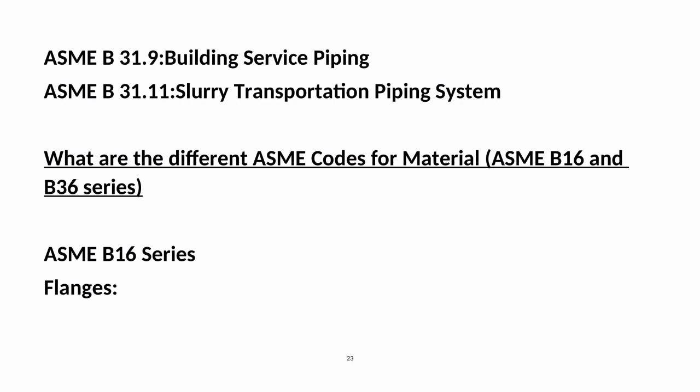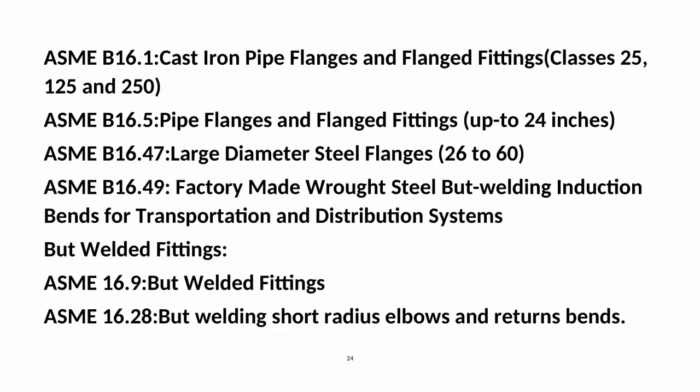What are the different ASME Codes for Material — ASME B16 and B36 Series? ASME B16 Series — Flanges: B16.1 — Cast Iron Pipe Flanges and Flanged Fittings Classes 25, 125, and 250; B16.5 — Pipe Flanges and Flanged Fittings up to 24 inches; B16.47 — Large Diameter Steel Flanges 26–60 inches; B16.49 — Factory Made Wrought Steel Butt Welding Induction Bends for Transportation and Distribution Systems.